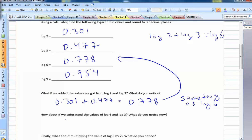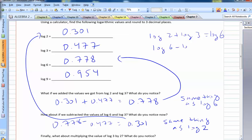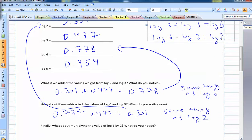Alright. Let's get to the next question. What if we subtracted the values of log 6 and log 3? Now log 6 is .778. Log 3 is .477. Of course we get .301. So that's the same thing as log 2.